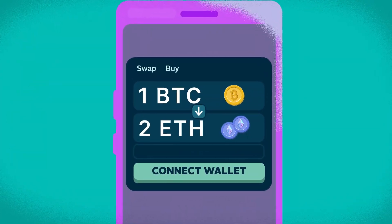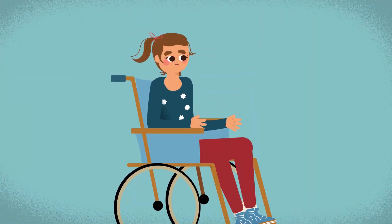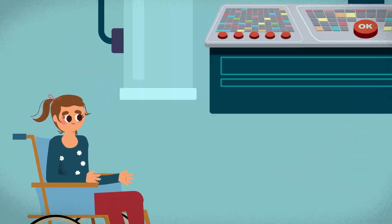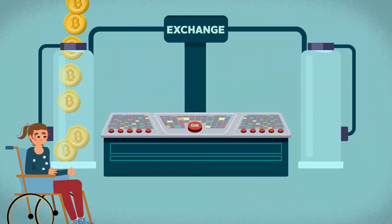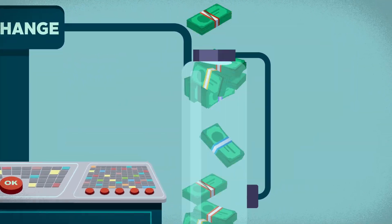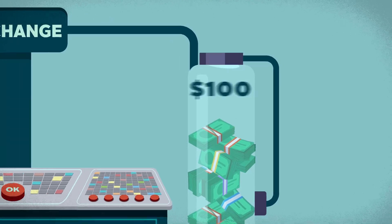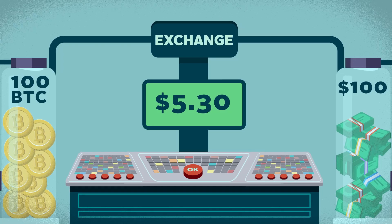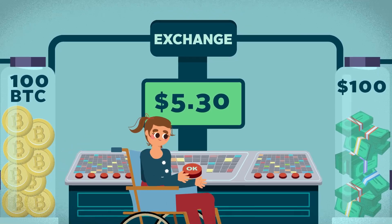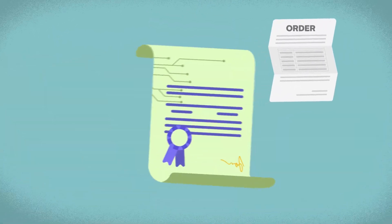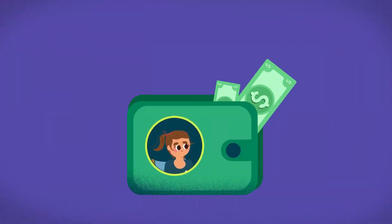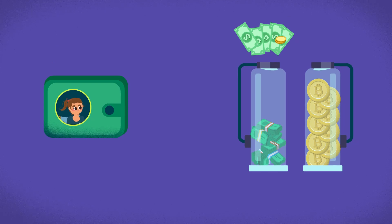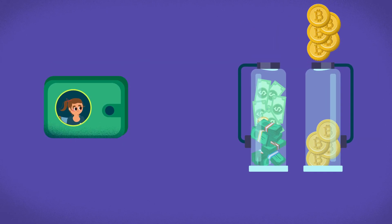Now let's look at an AMM exchange in action. Mary wants to buy 5 BTC using an AMM exchange. Based on the supply of 100 BTC and $100 in the liquidity pool, the AMM calculates $5.30 as the price of the trade. Mary agrees with the price and submits the order to the smart contract. $5.30 is taken from Mary's wallet and placed into the pool, while she takes 5 BTC from the pool.